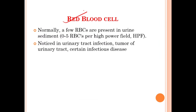Now we will talk about red blood cells (RBCs), which are an element of the urinary sediment. Normally, a few RBCs are present in urine sediment — 0 to 5 RBCs counted under the high power field (HPF). RBCs are noticed in cases of urinary tract infection, tumor of the urinary tract, and certain infectious diseases.